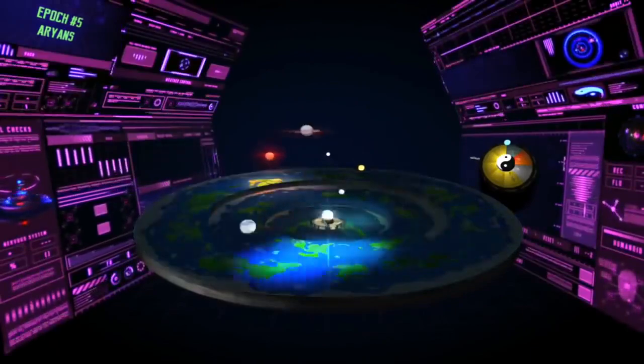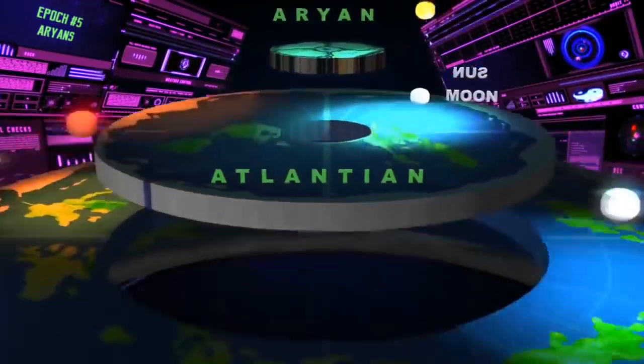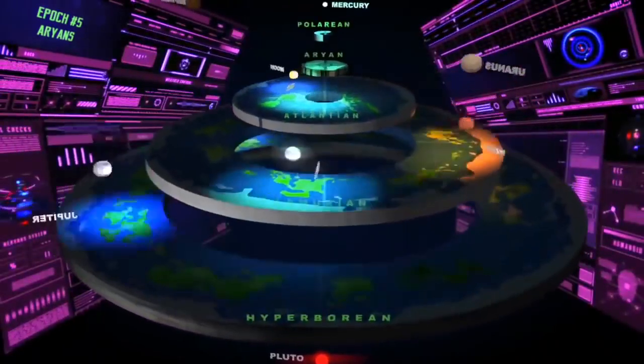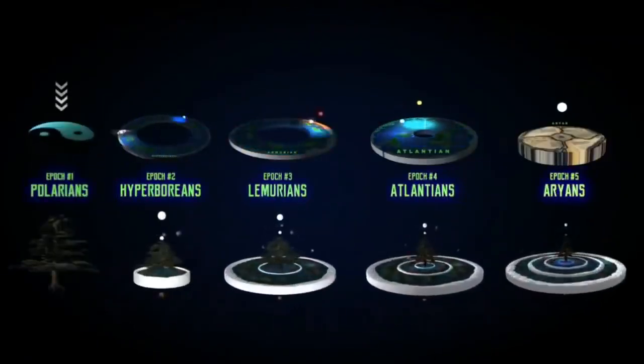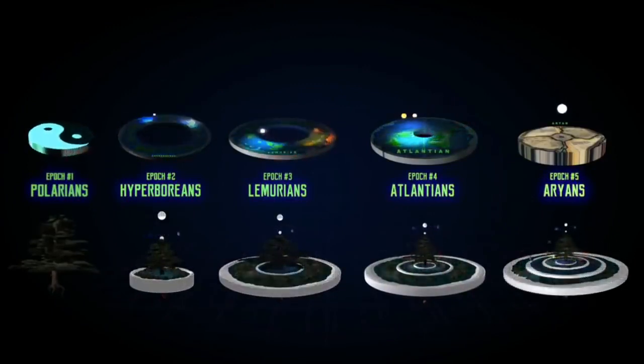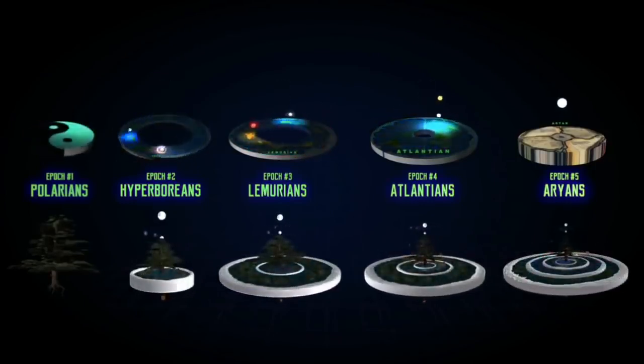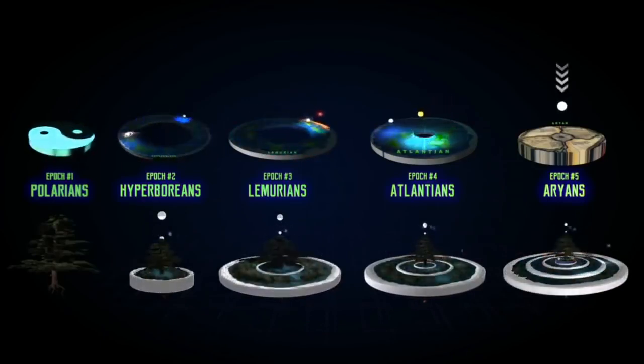And so here we are, 6,000 years into the Arian or fifth epoch. In summary, we have five epochs so far. The Master Race, the Polarians, 24,000 years later, the Hyperborean realm was created, 24,000 years after that, the Lemurian realm was created, then the Atlantean, then the Arian. And according to many ancient scriptures, mythologies, and mystics, there are two more epochs to come, meaning seven epochs, seven earthly realms, and seven root races.